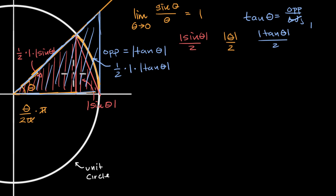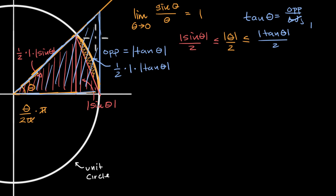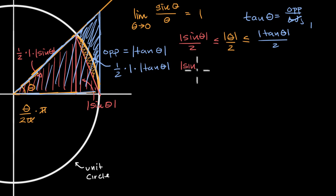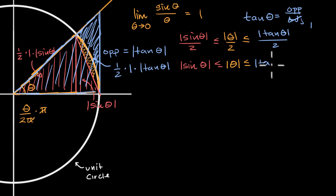How do these areas compare? The salmon triangle sits inside the wedge, and the wedge sits inside the blue triangle. So: |sin θ| / 2 ≤ |θ| / 2 ≤ |tan θ| / 2. Multiplying everything by two gives: |sin θ| ≤ |θ| ≤ |tan θ|, which we can rewrite as |sin θ| ≤ |θ| ≤ |sin θ| / |cos θ|.